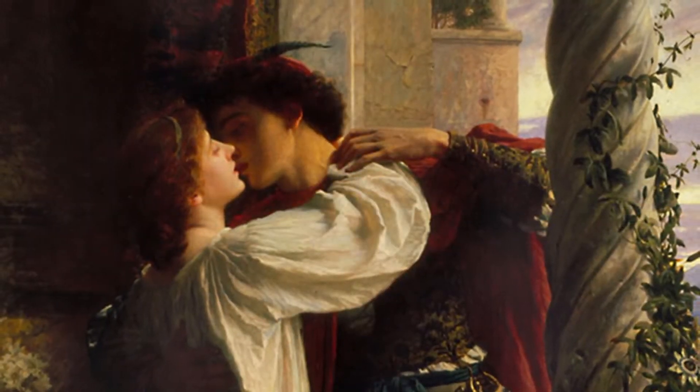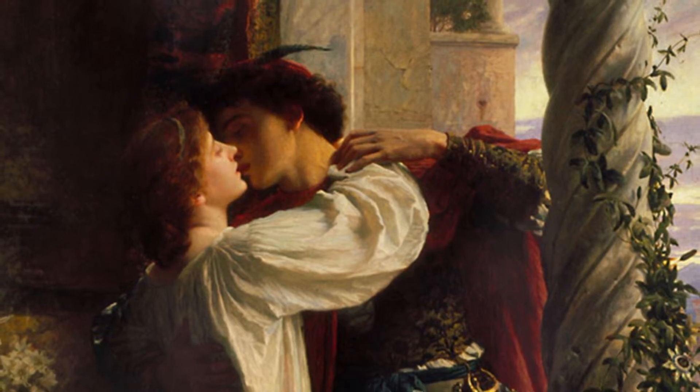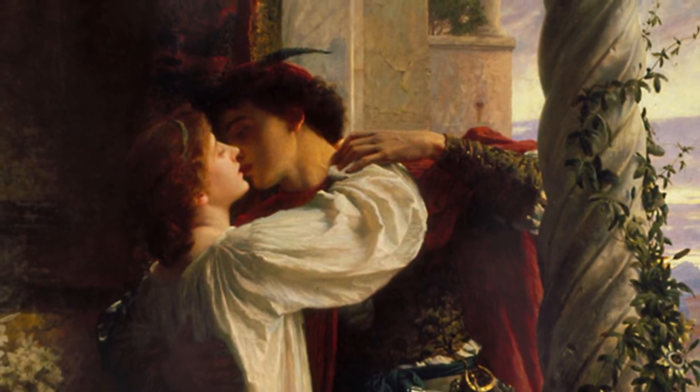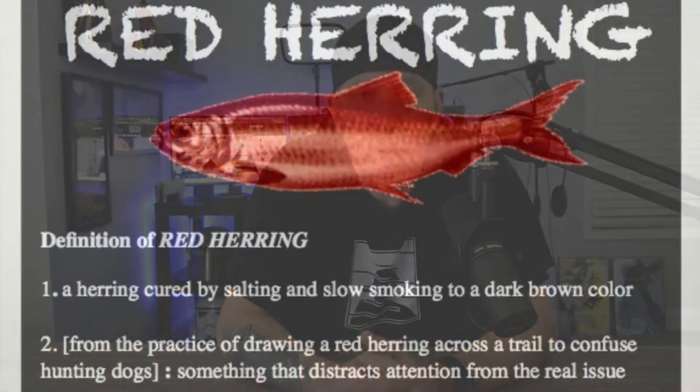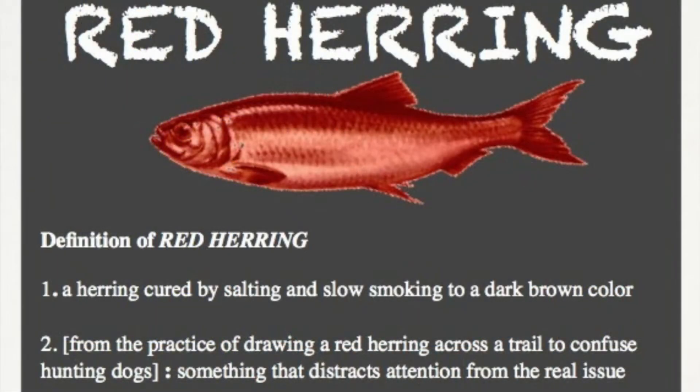A great example of direct foreshadowing is Romeo and Juliet — Shakespeare essentially telling you what's going to happen when Romeo and Juliet talk about how they didn't want to live unless they could live together. He straight up told us this is going to be a tragedy. And of course, the other side of that coin is that sometimes authors use false clues to mislead readers. These are called red herrings, but we'll talk about those in another video.